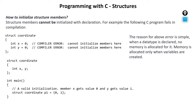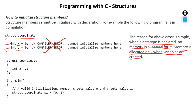Now comes an important part: how to initialize structure members. Suppose we have a structure 'coordinate' with members X and Y. Can we write X = 0, Y = 0 inside the structure definition? No — we cannot initialize members of a structure there. The reason is that when a data type is declared, no memory is allocated for it. Memory is only allocated when a variable is created.